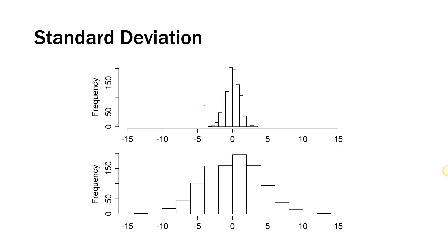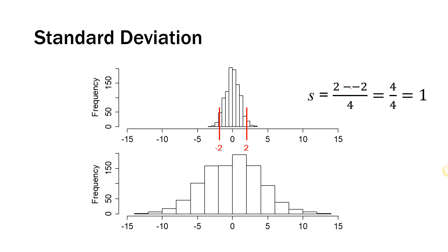Let's look at the top graph first. I want to cut off 2.5% on either side, so I come in a little bit and draw a line down to my x-axis, making note of where my line crosses. It looks like it's about negative two to two on this graph. I take the big number, two, minus the little number, negative two, and divide by four: two minus negative two gives four, divided by four gives one. So a good estimate for the standard deviation of this top distribution is one.